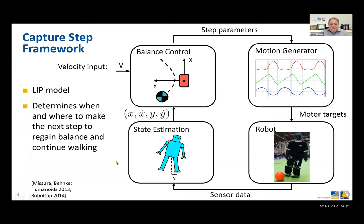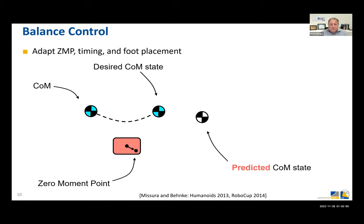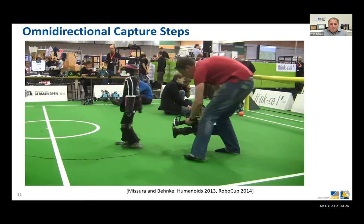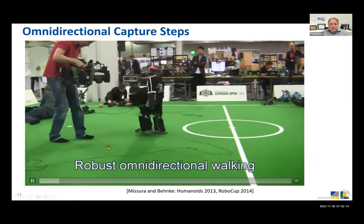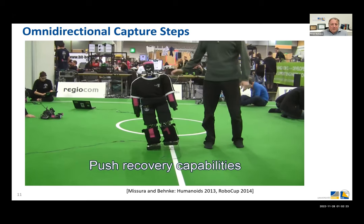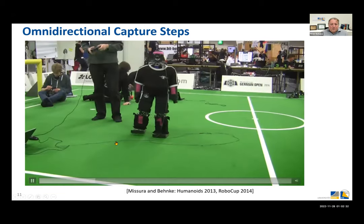To maintain balance, Marcel Musura, who graduated with a PhD from my group, developed the Capture Step Framework. We use a linear inverted pendulum model and decide when and where to make the next step to regain balance and control walking, depending on the estimated center-of-mass movement and predicted center-of-mass state. The gait is adjusted accordingly, and you can see that disturbing the robot causes foot placement and step timing to be adjusted.